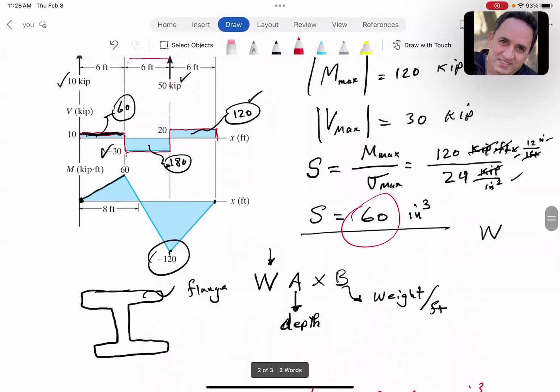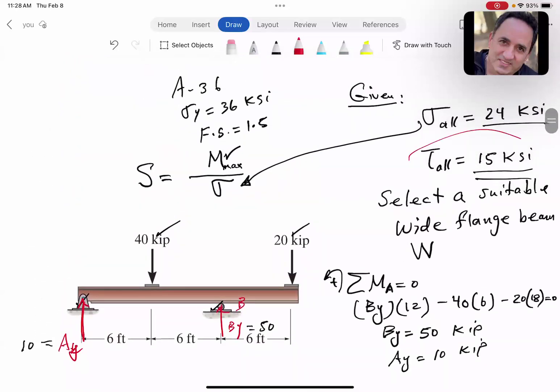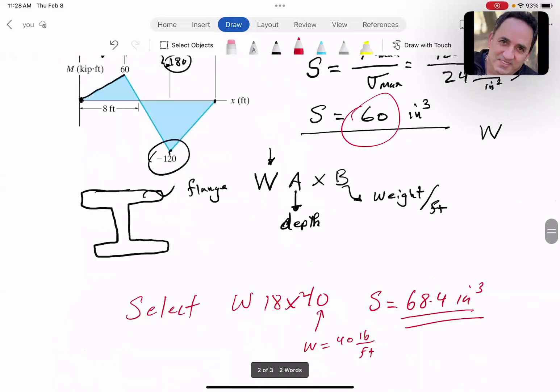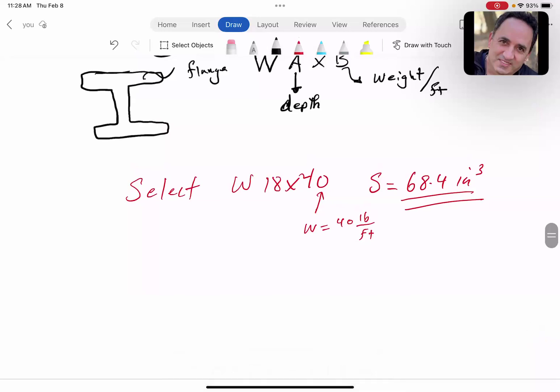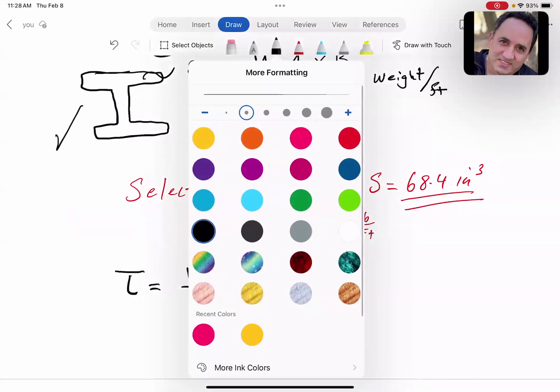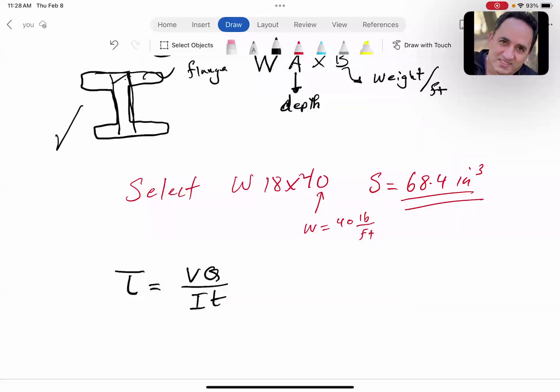One other thing we have to check: we were given the allowable shear stress. Are we safe in terms of shear stress? Shear stress usually is not the mode of failure compared to bending stress. But τ (transverse shear stress) is calculated based on VQ/IT. In wide flange beams (I have videos on this), maximum shear stress happens right here on the neutral axis, and you can approximate that as V divided by area of the web, as if the web is doing all the work.